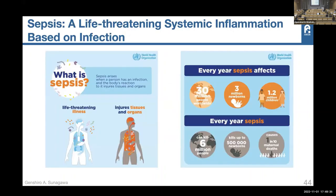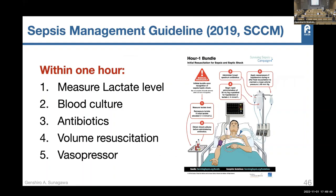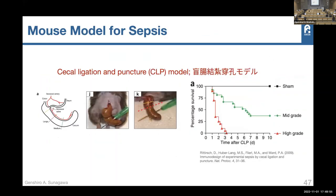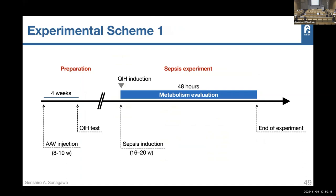We first chose sepsis — a systemic inflammation based on bacterial infection. Many people are killed by sepsis every year. In mice it's easy to induce sepsis by making a hole in the cecum, and you can control severity by choosing needle size or position. We made a model where mice would die within 48 hours and tested how QIH would change the outcome.